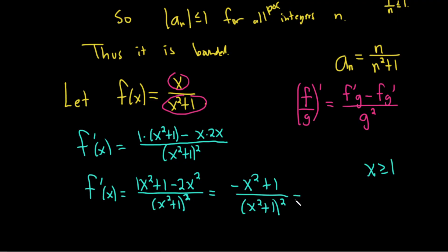Let's write it like this. One minus x squared over x squared plus one squared. So this is interesting because this here is going to be less than or equal to zero. Because the biggest this can be is when x is one. If x is one, you get one minus one squared. So you get zero. So the whole thing is zero.